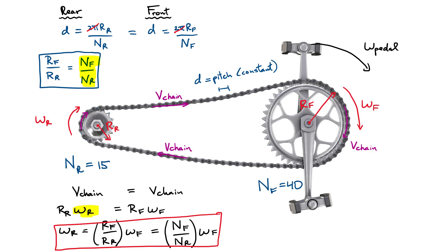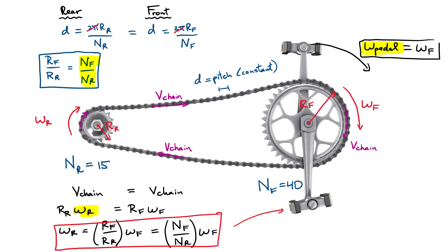Now let's link what's going on in the front to what's happening with the pedals. We have the angular frequency of the front in our equation, and the goal is to connect it to how fast the pedals are rotating — Omega_pedal. Since the pedals are directly connected to the front chain ring, they rotate at the exact same angular frequency: Omega_pedal = Omega_F. So we rewrite our expression for the rear angular frequency in terms of the pedal: Omega_R = (N_F / N_R) × Omega_pedal. Let's box this equation — we only need one more step to calculate the speed of the bike.